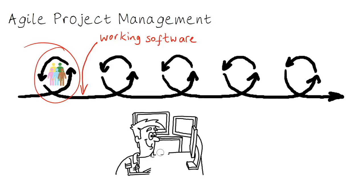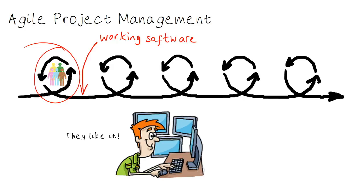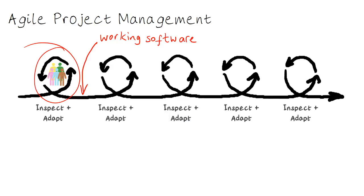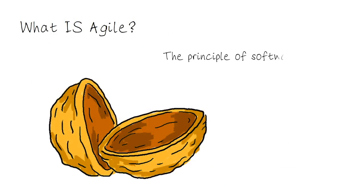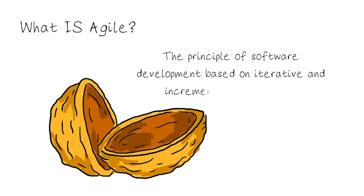Because each iteration is so short and we're getting user feedback so fast, we're learning what works and what users want as we go along, rather than having to anticipate it all up front like with the waterfall approach. So we're inspecting and adapting as we go along with each iteration. And because these cycles are so short, we can change direction very easily. If market conditions suddenly dictate that a particular feature is of higher priority than we originally planned, then no problem — we can work on that on the very next cycle. So we can refine our definition of agile as the principle of software development based on iterative and incremental development.